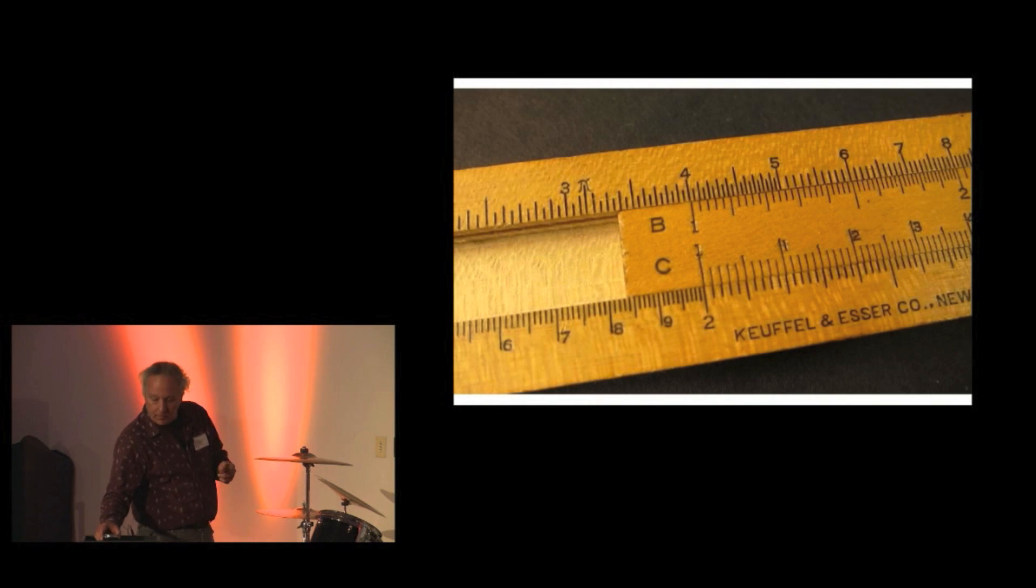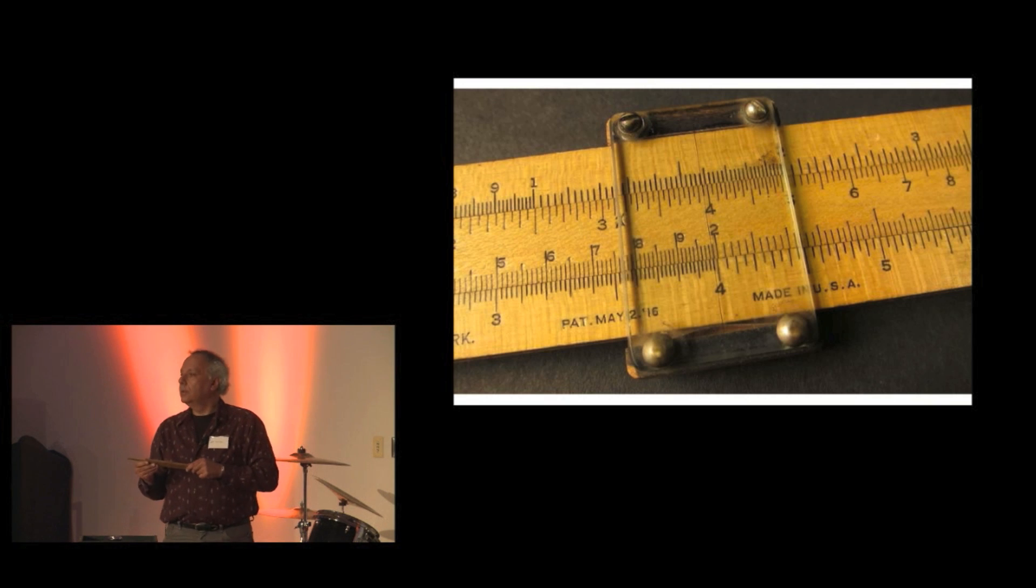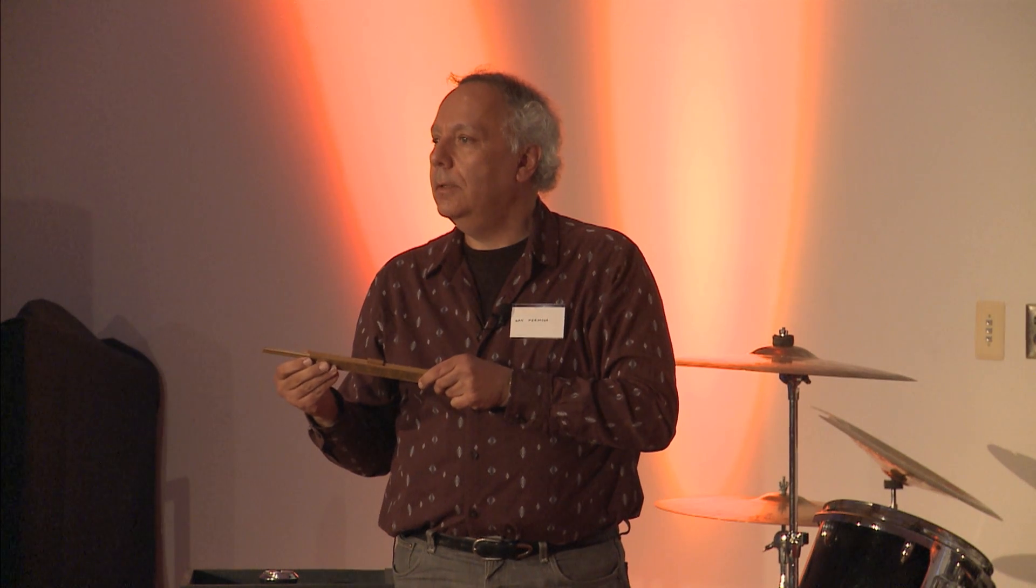So to multiply, slide the one until it lines up with the two. Slide the slide to the number you want to multiply by two. In this case, it's two. And the answer is four. Now I know what you're thinking - I knew that. But you can do more complex numbers, of course.